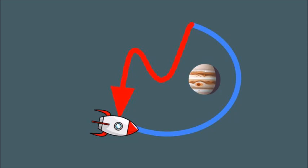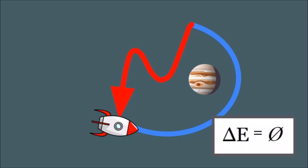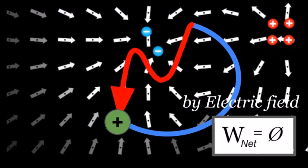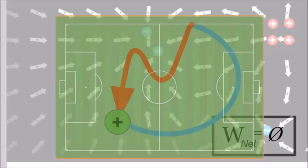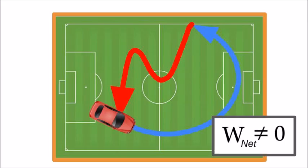Well that, and for a closed path, this, and therefore that. So okay, I guess I am saying a lot about the net work done by gravity or by the electric field. Friction, again, is different. Friction, again, is not conservative.